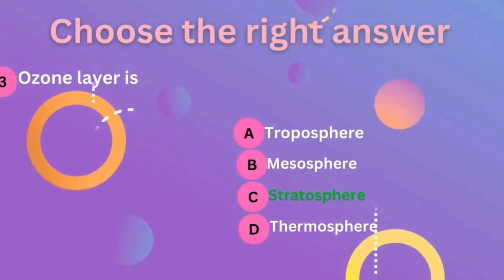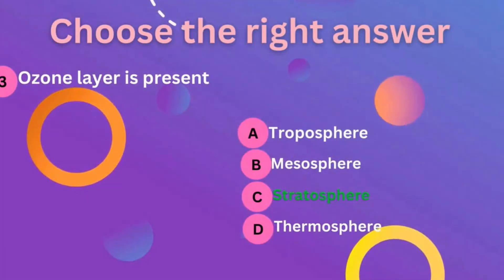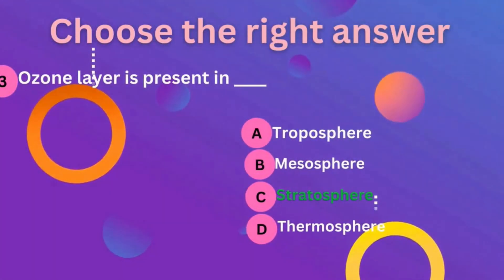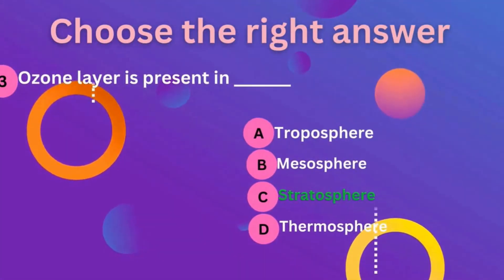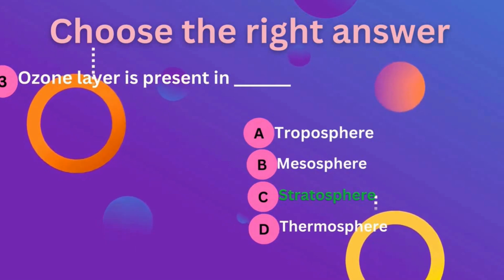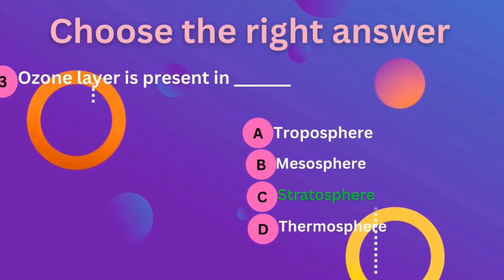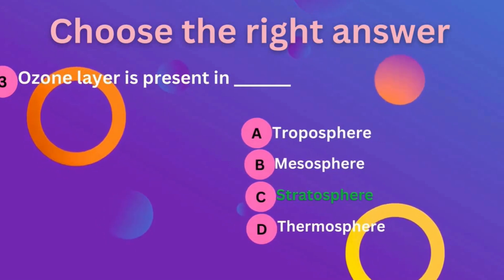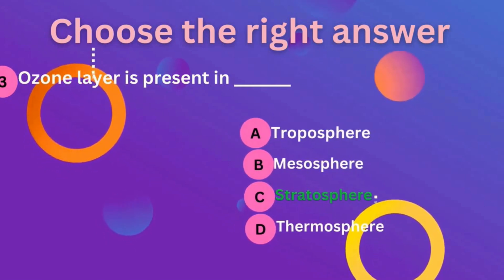Third question: the ozone layer is present in? The correct answer is C — that is the stratosphere.